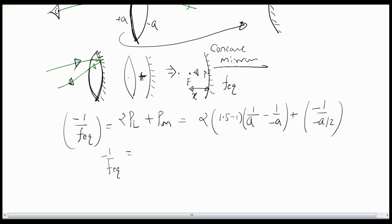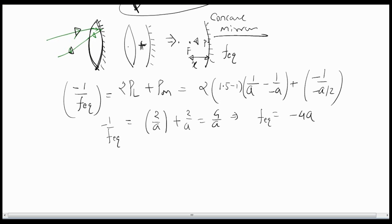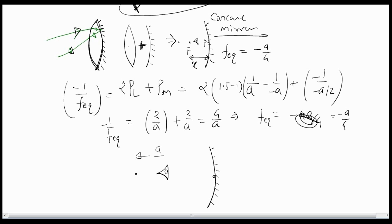Solving: (1.5 minus 1) equals 0.5, times 2 equals 1. So 1 times (1/A minus 1/minus A) equals 2/A plus 2/A equals 4/A. Hence f-equivalent is minus A over 4. Since this effective concave mirror has a focal length of A over 4, the eyes should be between the pole and focus, meaning the distance of the eyes from the lens system should be less than A over 4. Hence the maximum possible distance is A over 4.